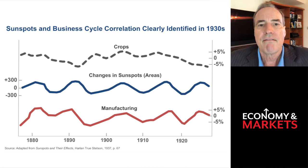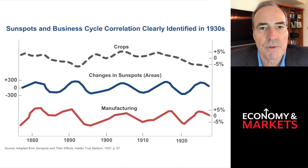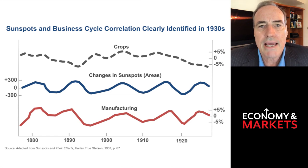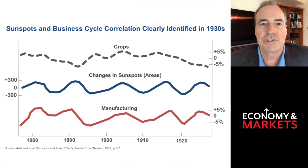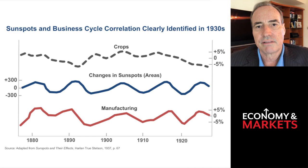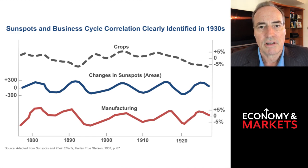This means people, when there's more energy coming, feel better and more positive — people feel better when sitting out in the sun soaking in the rays. Manufacturing is not affected by weather like agriculture. The book is called Sunspots and Their Effects, and the correlation shown in the chart is unbelievably close to the manufacturing cycle back in the late 1800s and early to mid-1900s.